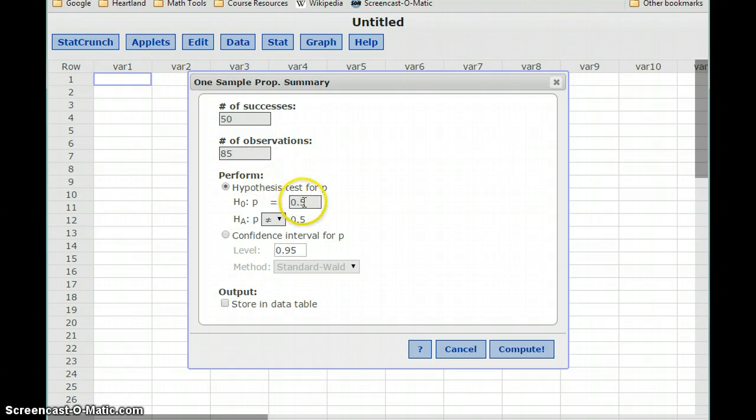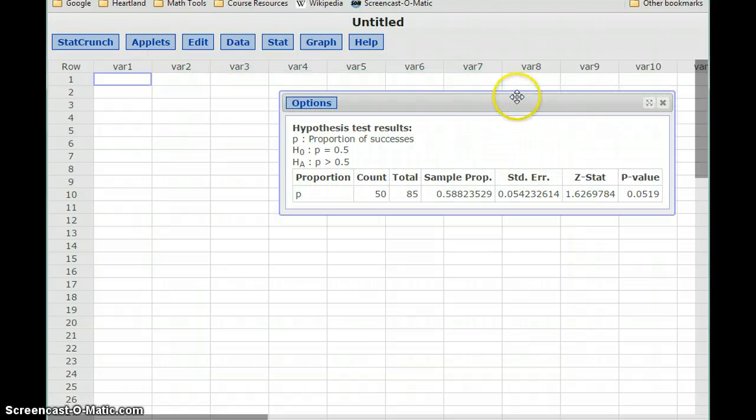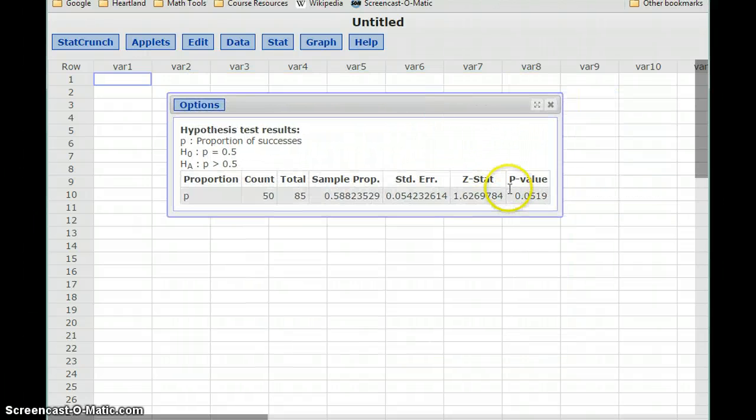And then we'll establish our hypotheses. So we already set this up that our population proportion, our null hypothesis, says that's equal to 50%. Our alternative is a statement that it's actually greater than 50%. And we'll click compute to generate our p-value. So in this case again, that's 0.0519.